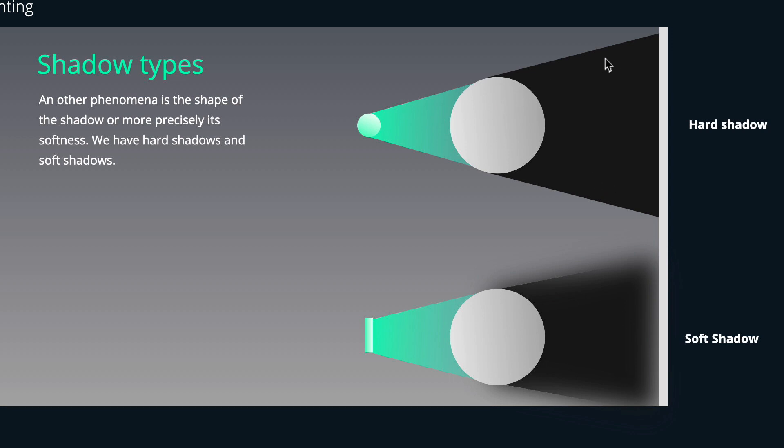Hard shadows you get mostly when you have like a point light which is very small or very far away. You could imagine the sunlight at midday and you already experience this in real life that the shadows get really hard. While in evening time, if you have like a bigger light source or the light source is closer to your object, the shadows will get fuzzy and more diffuse.